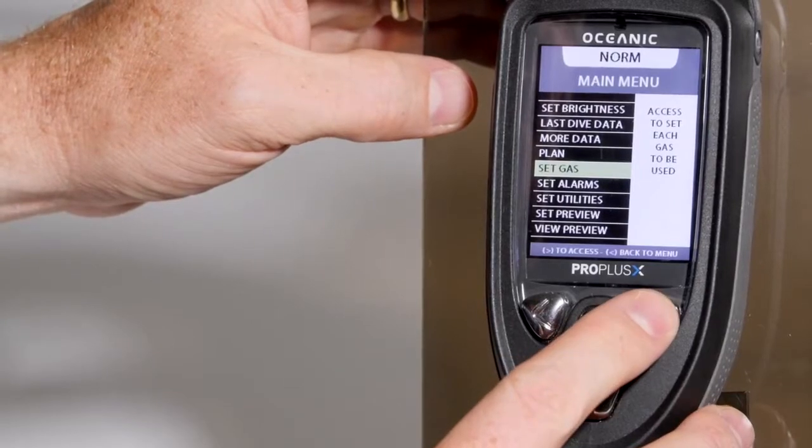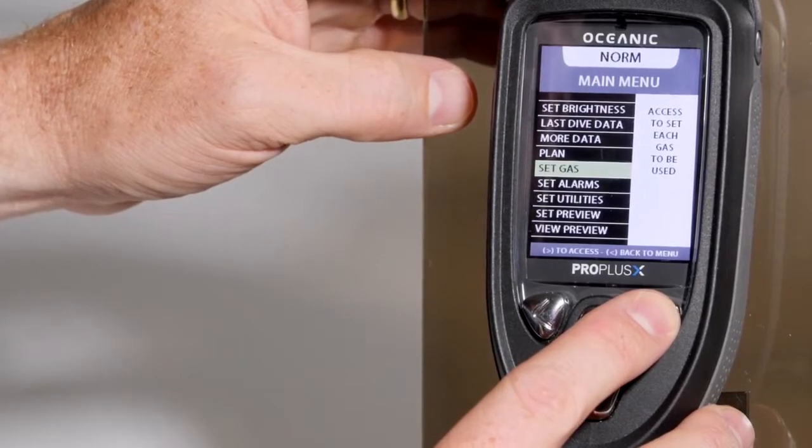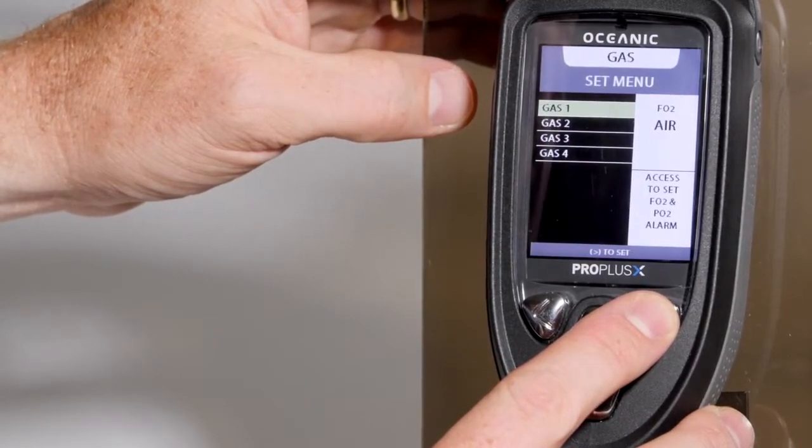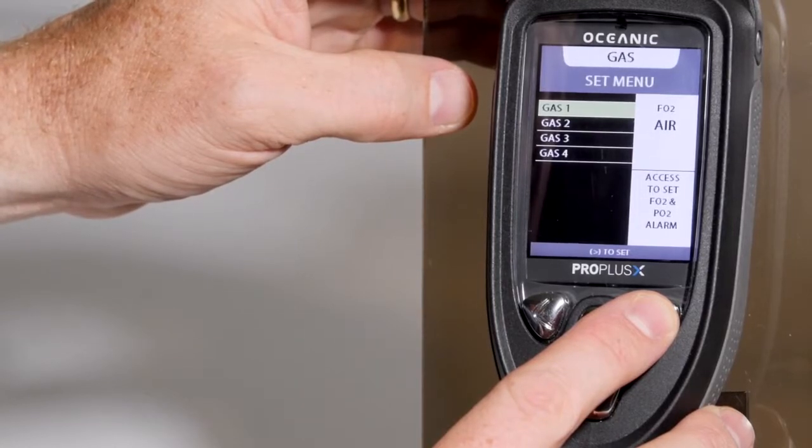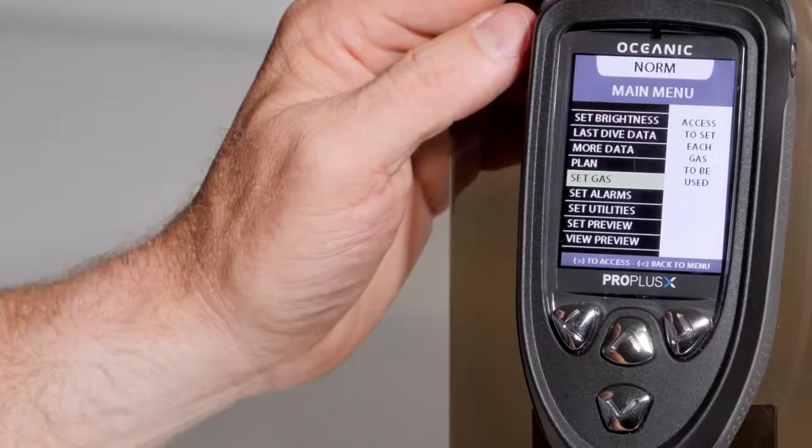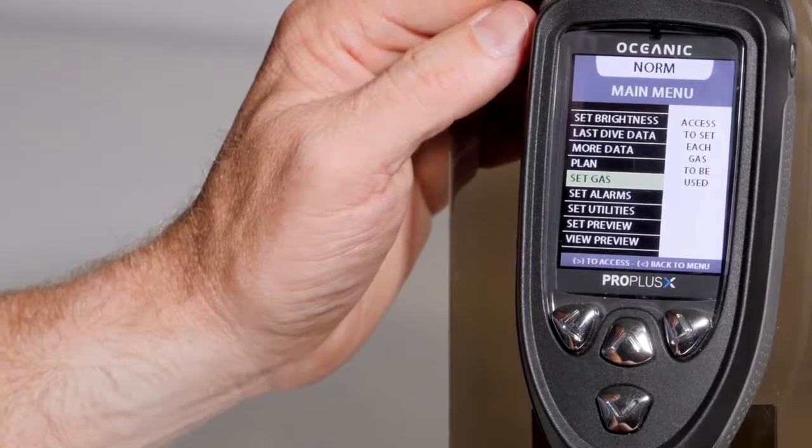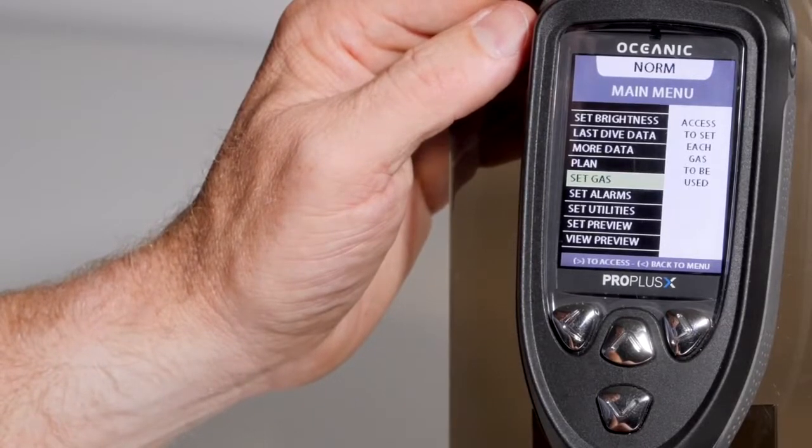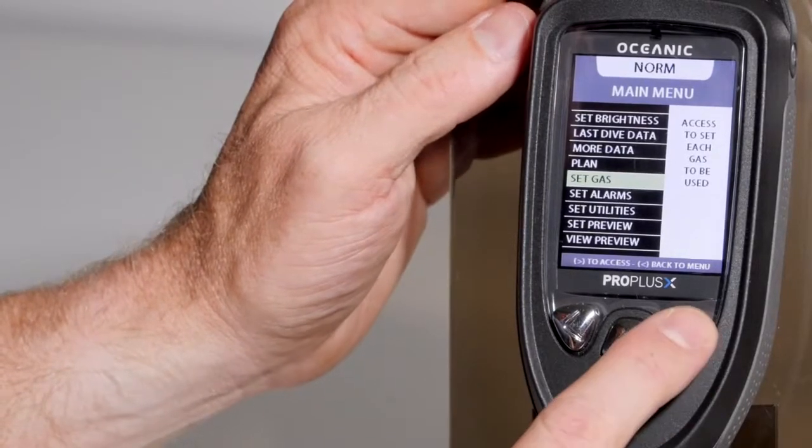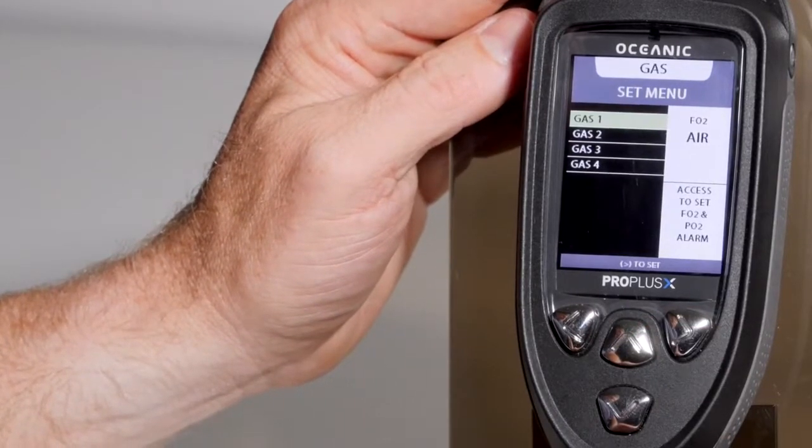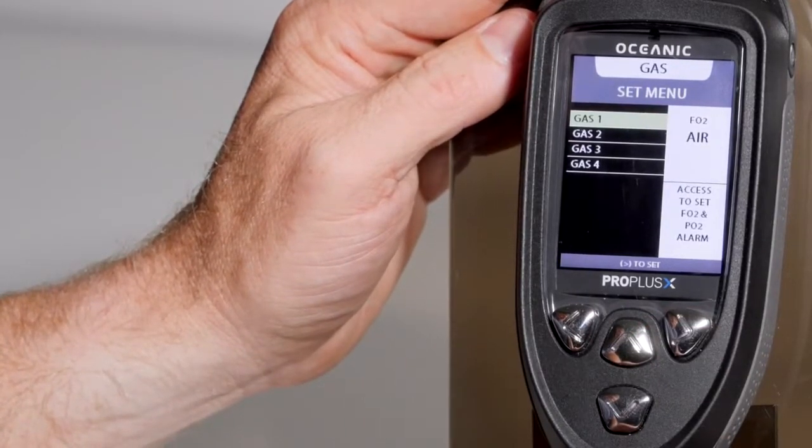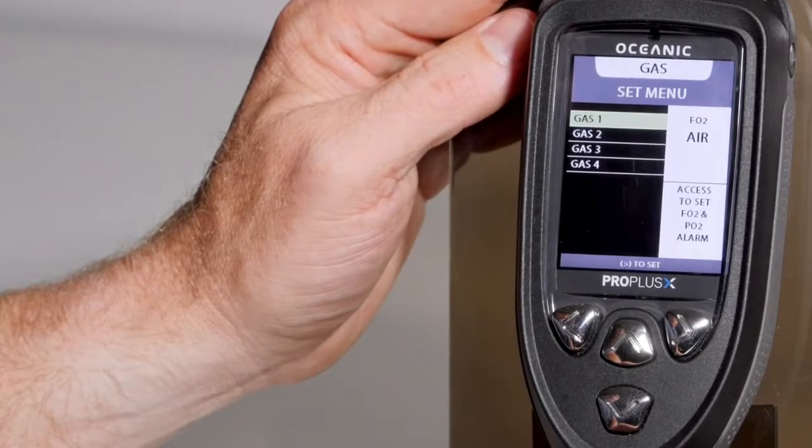You can set gas. If you're diving air, you don't need to use this gas. But you can go in and set gas 1, gas 2, 3, or 4. If you're diving nitrox, you would set these mixes up under the set gas menu. You have gas 1, 2, 3, and 4. Gas 1 is always your primary bottom gas.